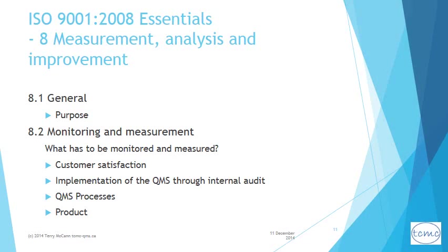The last of the main clauses is 8: Measurement, Analysis and Improvement. 8.1 explains the purpose of this clause: to demonstrate acceptability of product, determine that the QMS has been documented and implemented in conformity to the standard, and to continually improve the efficiency and effectiveness of the QMS.